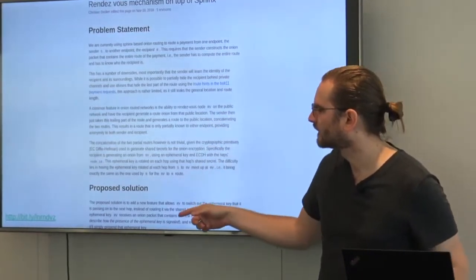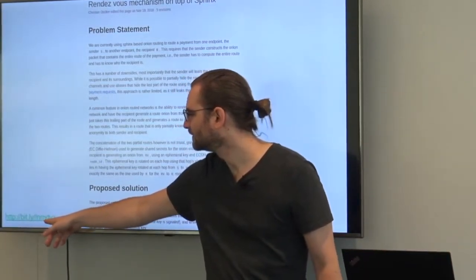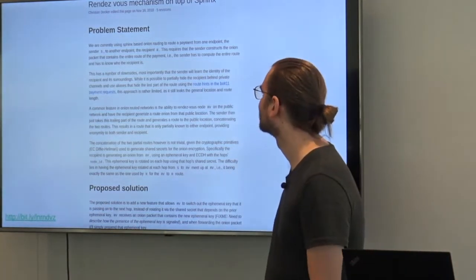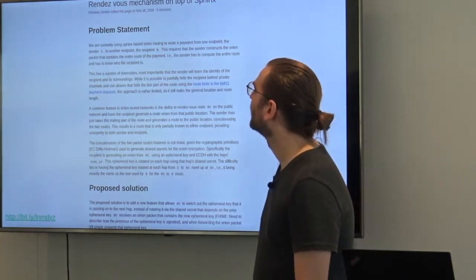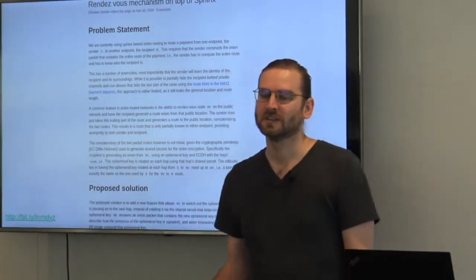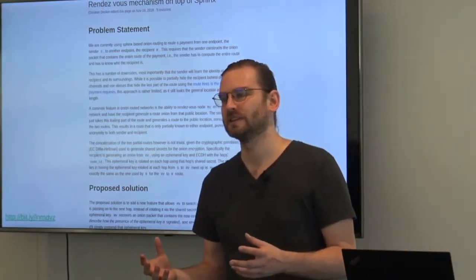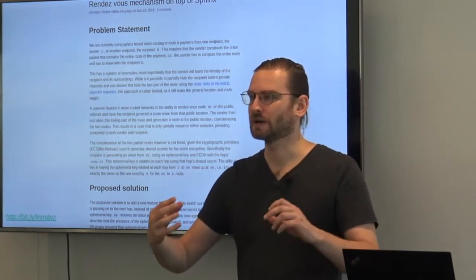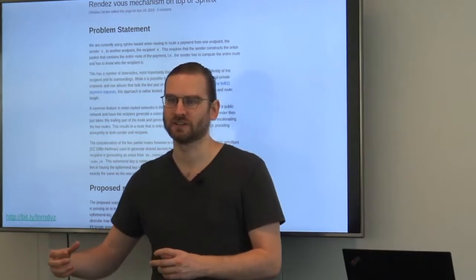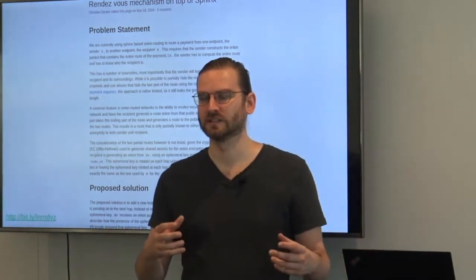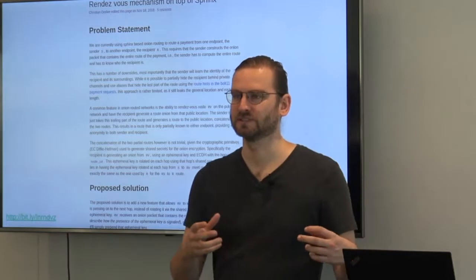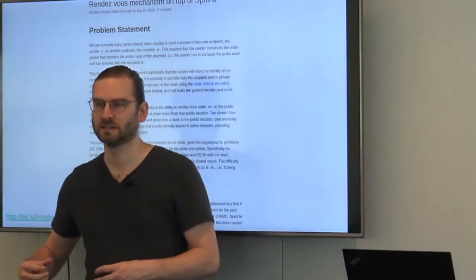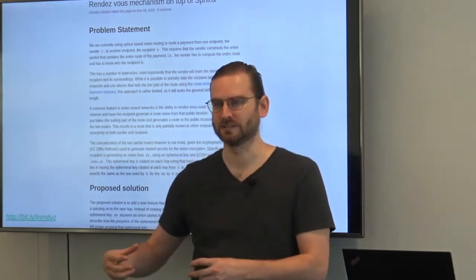So this is the write-up. It's L-N-R-N-D-V-Z, which is lightning rendezvous without all of the vowels. But I can give you the link later. So the idea is basically that, if you remember the construction of the onion, we were basically taking an onion and wrapping it, going backwards, from the recipient to the sender, right? And this looks very similar. Instead of going from the recipient to the sender, we are being given an intermediate state, and we just continue wrapping basically our part of the journey backwards.